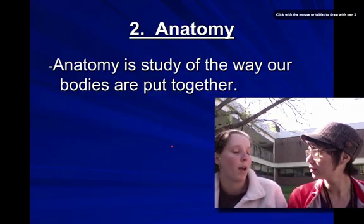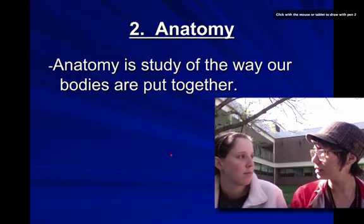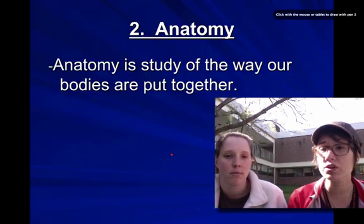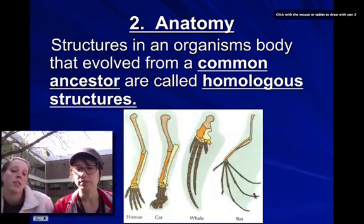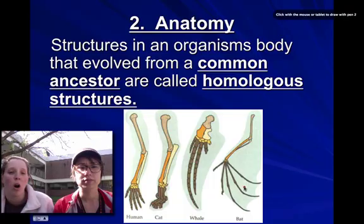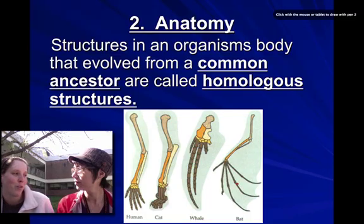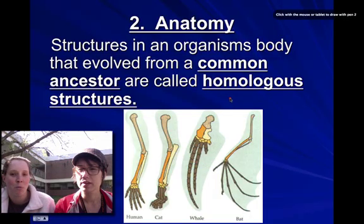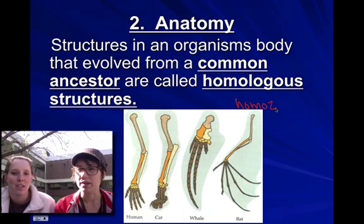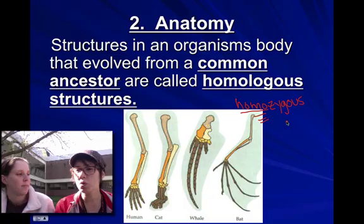Another line of evidence for the theory of evolution is our anatomy — basically the way our bodies are put together. We can look at the parts of organisms to determine whether there's been a change over time and also if they're related. One really important type of anatomy we look at is something called homologous structures. That word sounds familiar to another word from genetics — homozygous. The prefix 'homo' means same, so homologous structures means the structures are the same.